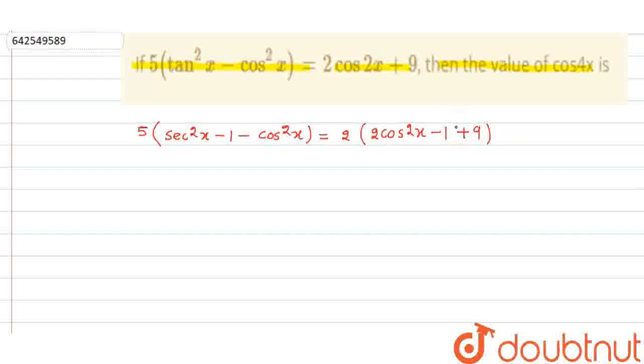So actually this is not in bracket. This is plus 9. Now what you do is just substitute that cos square x is t.